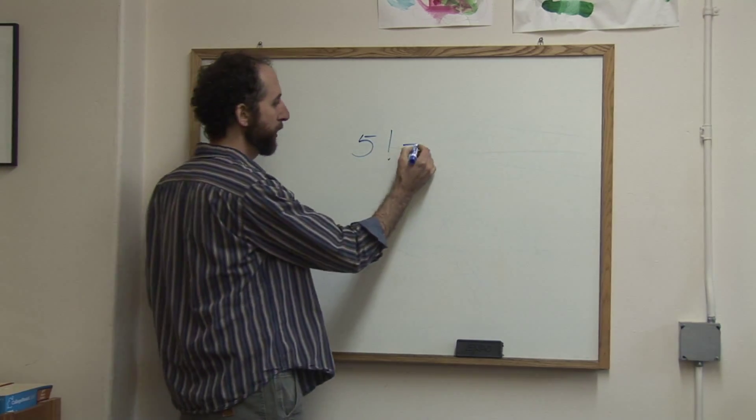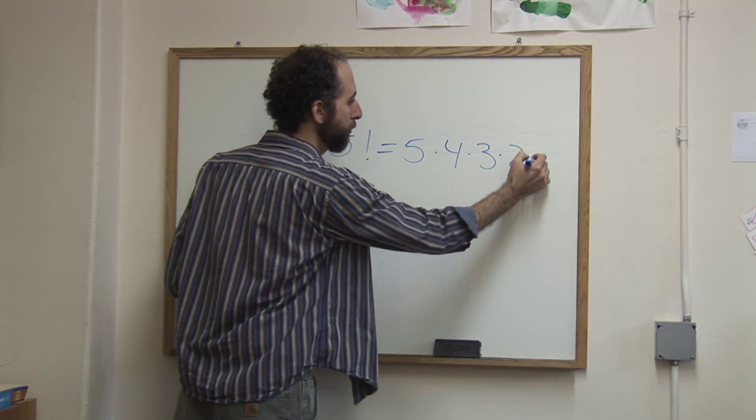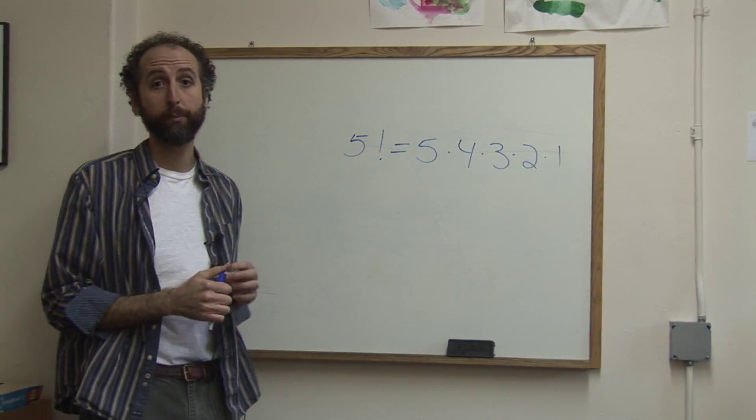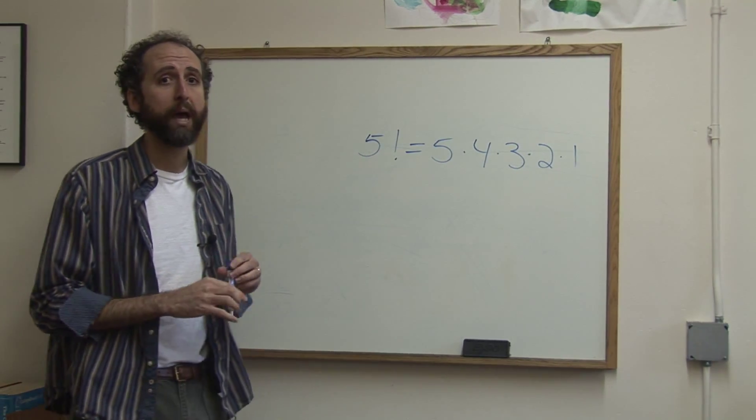So 5 factorial means 5 times 4 times 3 times 2 times 1. So this symbol, which is an exclamation point, is called factorial. And it's really just another symbol in math.